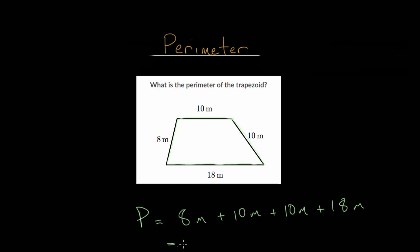So adding these together: 10 plus 10, that's 20, plus 8 is 28. And then 28 plus 18, let's simplify that. 20 plus 10 is 30, 8 plus 8 is 16, and 30 plus 16 is 46. So the total perimeter of this trapezoid is 46 meters.